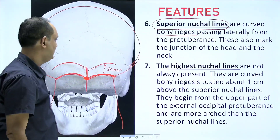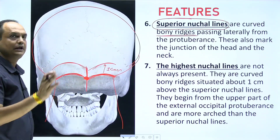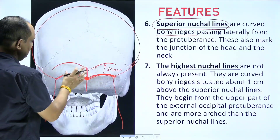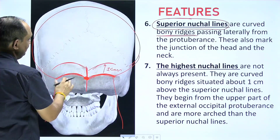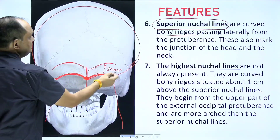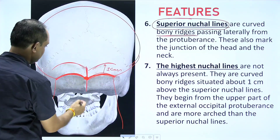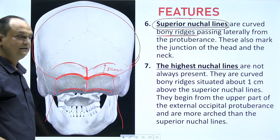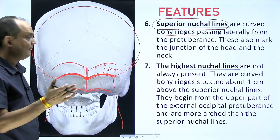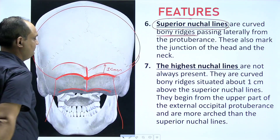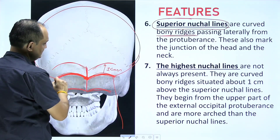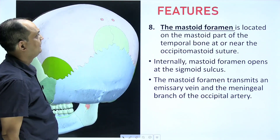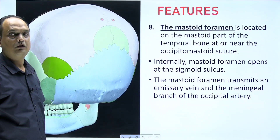The highest nuchal lines begin from the upper part of the external occipital protuberance and are more arched than the superior nuchal line. When reading norma occipitalis, the middle line referred to is the superior nuchal line. There is also an inferior nuchal line, but that is visible in norma basalis; in norma occipitalis, the two prominent curved lines are the superior nuchal lines, which are constant findings.